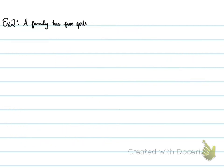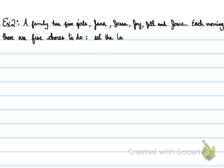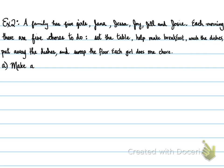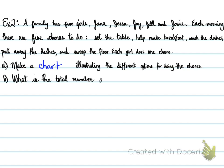Example number two. A family has five girls — Jenna, Jessa, Joy, Jill, and Josie. Each morning there are five chores to do: set the table, help make breakfast, wash the dishes, put away the dishes, and sweep the floors. Each girl does one chore. We're going to make a chart representing this data, illustrating the different options for doing the chores. The second part asks for the total number of different arrangements that can be made.